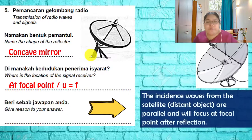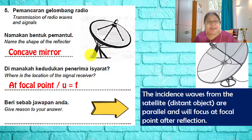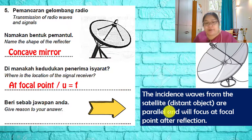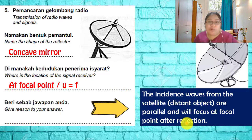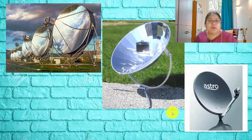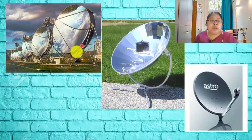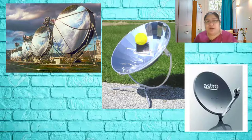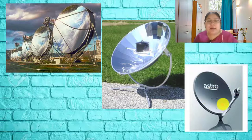The incident wave from the satellite comes from a distant object, so the waves are parallel and will focus at the focal point after reflection. This is why we place the receiver exactly at the focal point — to receive the parallel signal from far away. This is shown in examples of satellite dishes used to receive signals.